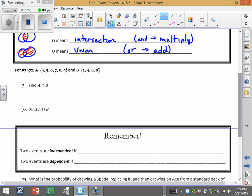So if we're given these two sets, set A and set B, find the intersection of A and B. In other words, what do they have in common? So A and B both have a 4, they both have a 6, and they both have an 8.